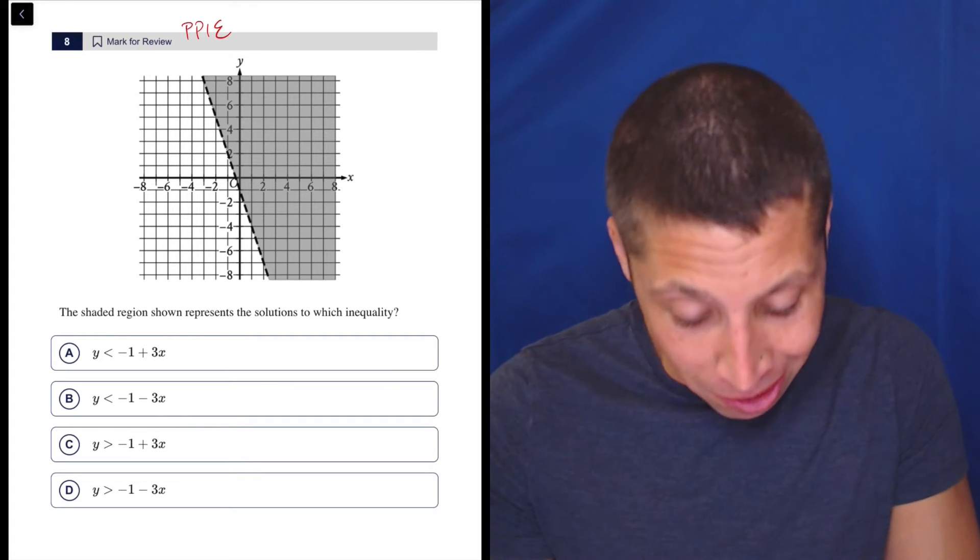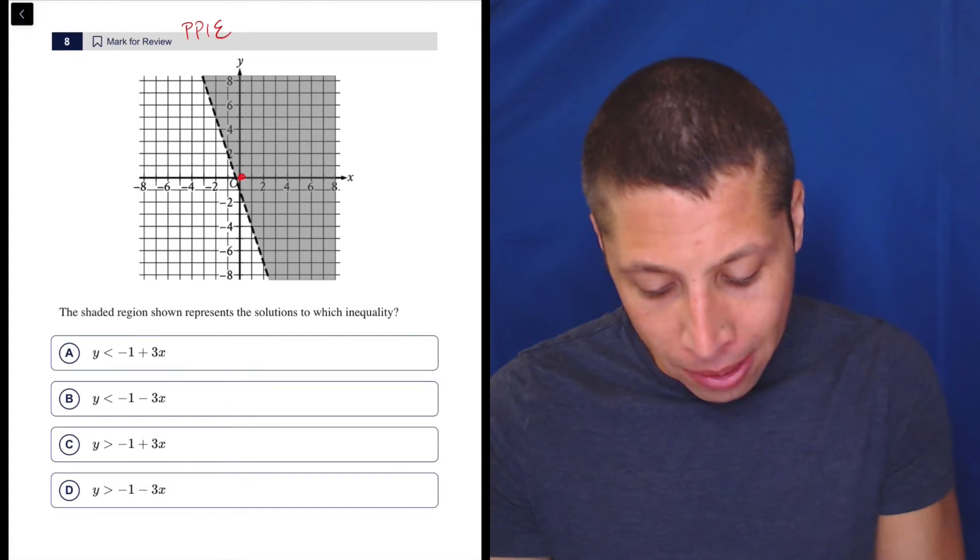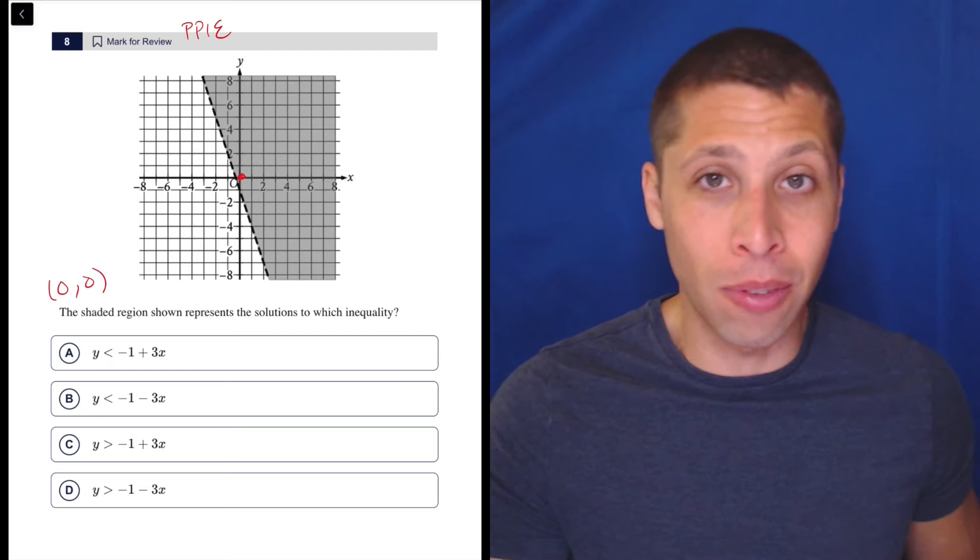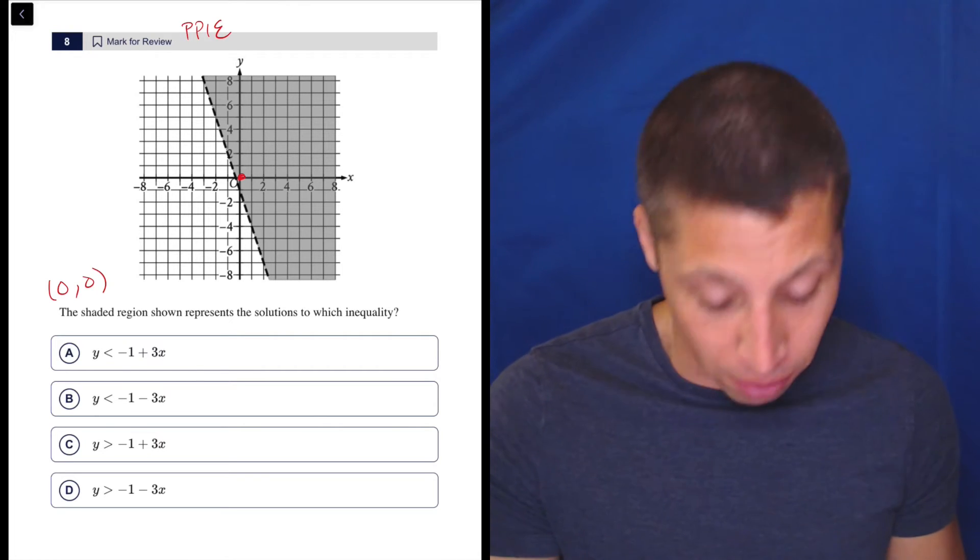And my favorite point is in the shaded region: zero, zero. So what happens if I put zero, zero into each of these equations? Very quickly, I should be able to tell what's going on, at least for half of them.